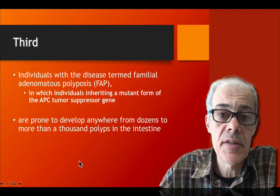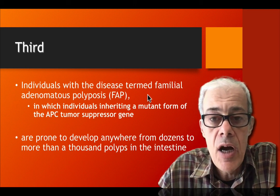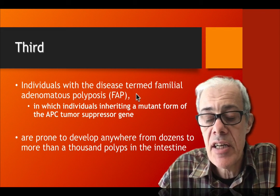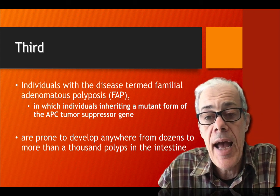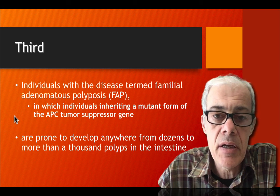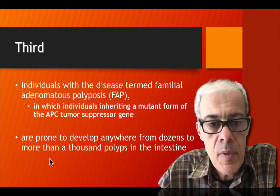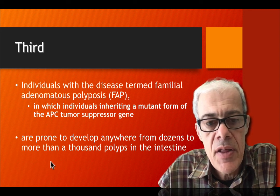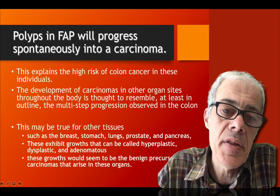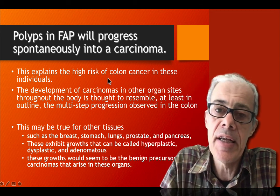The third piece of evidence comes from familial diseases — specifically, an inherited condition called familial adenomatous polyposis. These patients have inherited early-step mutations and give rise to polyps within the colon due to inherited genetic mutations in a gene called the APC gene. These patients are also prone to getting colon cancer. Effectively, this inherited mutation is giving rise to colon cancer, and we have the succession of phenotypes clearly documented for colon cancer.